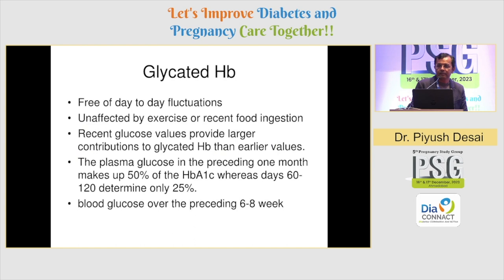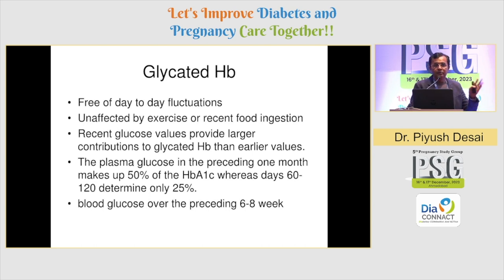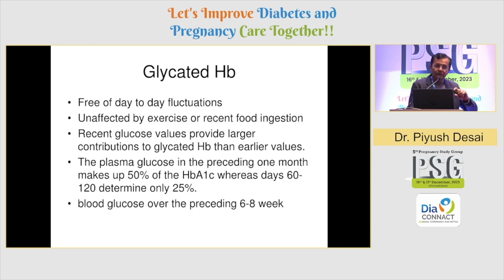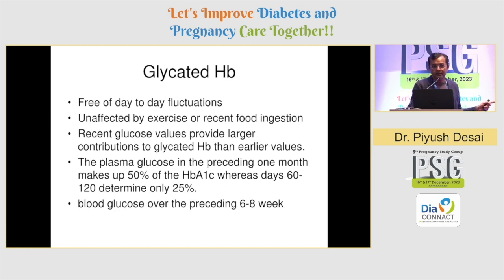Why has HbA1C become so popular in the last 15–20 years? Because it is free of day-to-day fluctuations. This test need not be done in a fasting state and cannot be affected by exercise — it can be done at any point of time. It gives an idea of a three-month average sugar because RBCs' lifespan is around 90–120 days. Because new RBCs are continuously produced, it gives a better idea of the last one month, contributing 50%, while the previous month contributes 25%.